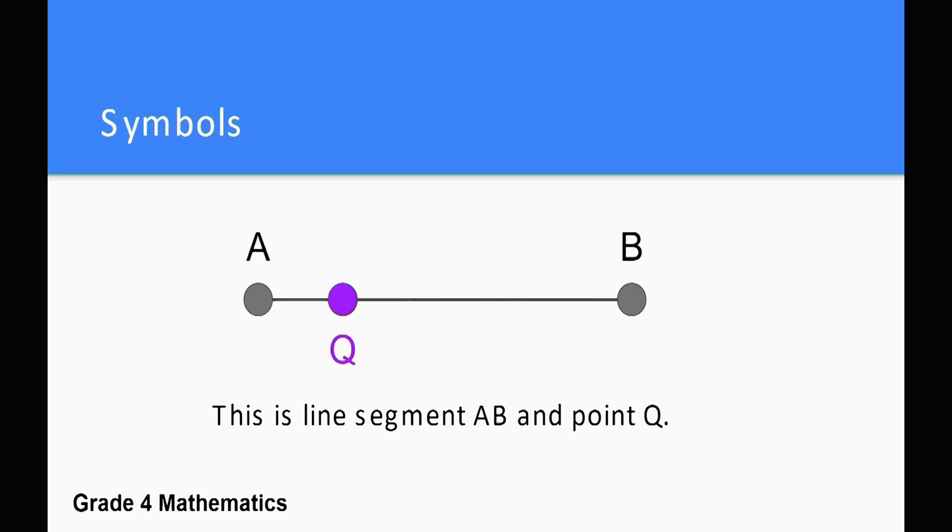Mathematicians use special symbols to identify lines, line segments, rays, angles, and points. They identify points and end points with capital letters. This helps us identify points and line segments. This is line segment AB and point Q.